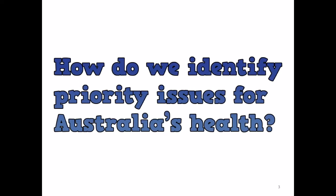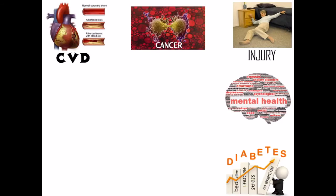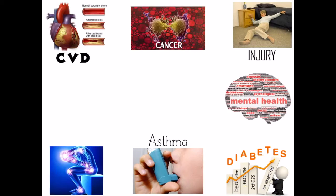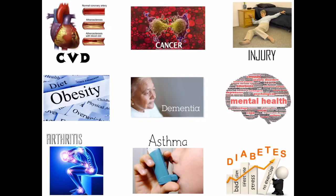Australia is one of the healthiest countries in the world; however, there are still a number of health problems that the population experiences. The challenge for the Australian Government is to allocate a limited amount of resources to address these health problems, and this means priorities need to be established. Currently we have nine national health priority areas, and they include cardiovascular disease, cancer, injury, mental health, diabetes, asthma, arthritis and musculoskeletal disorders, obesity, and dementia.